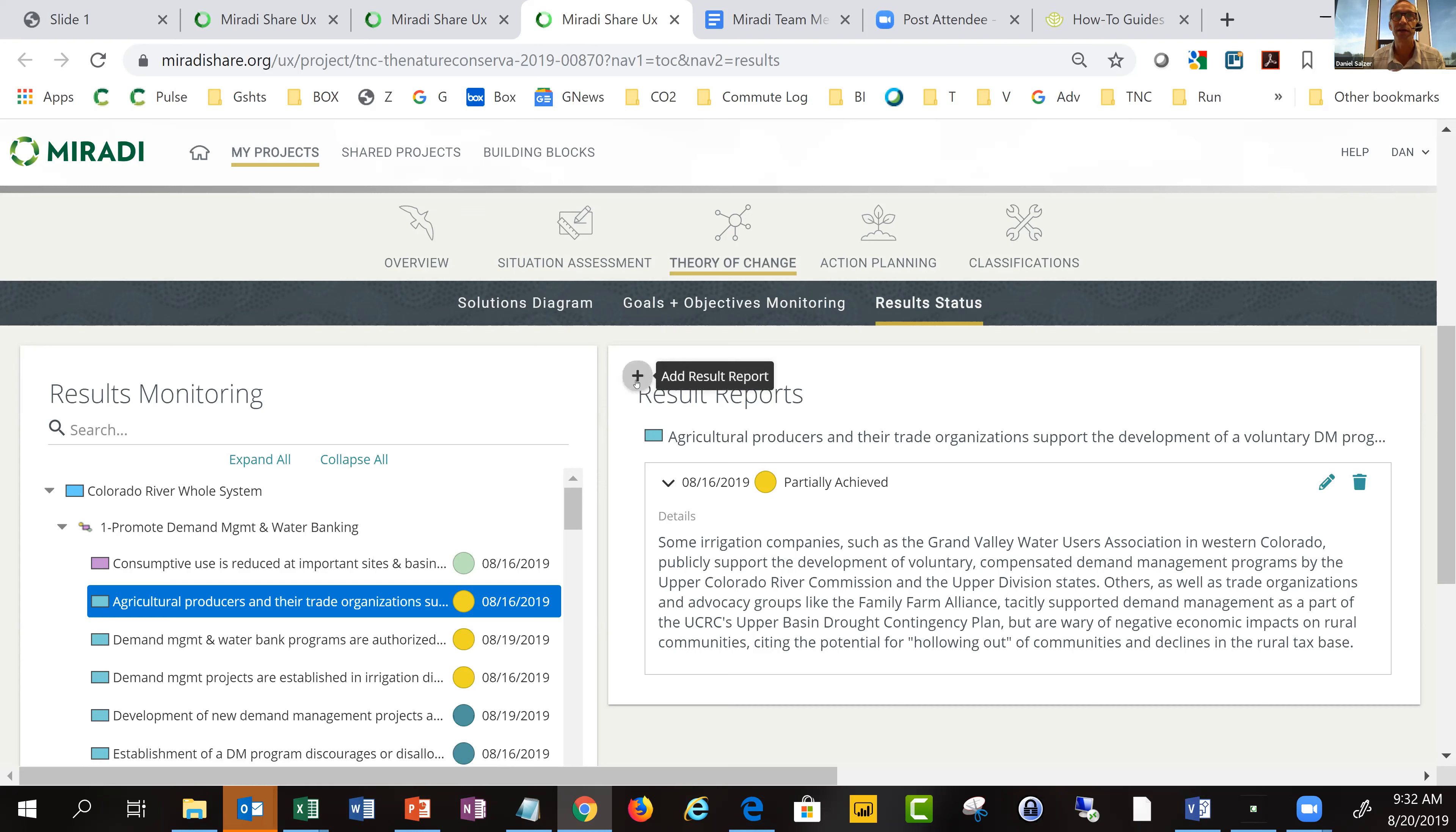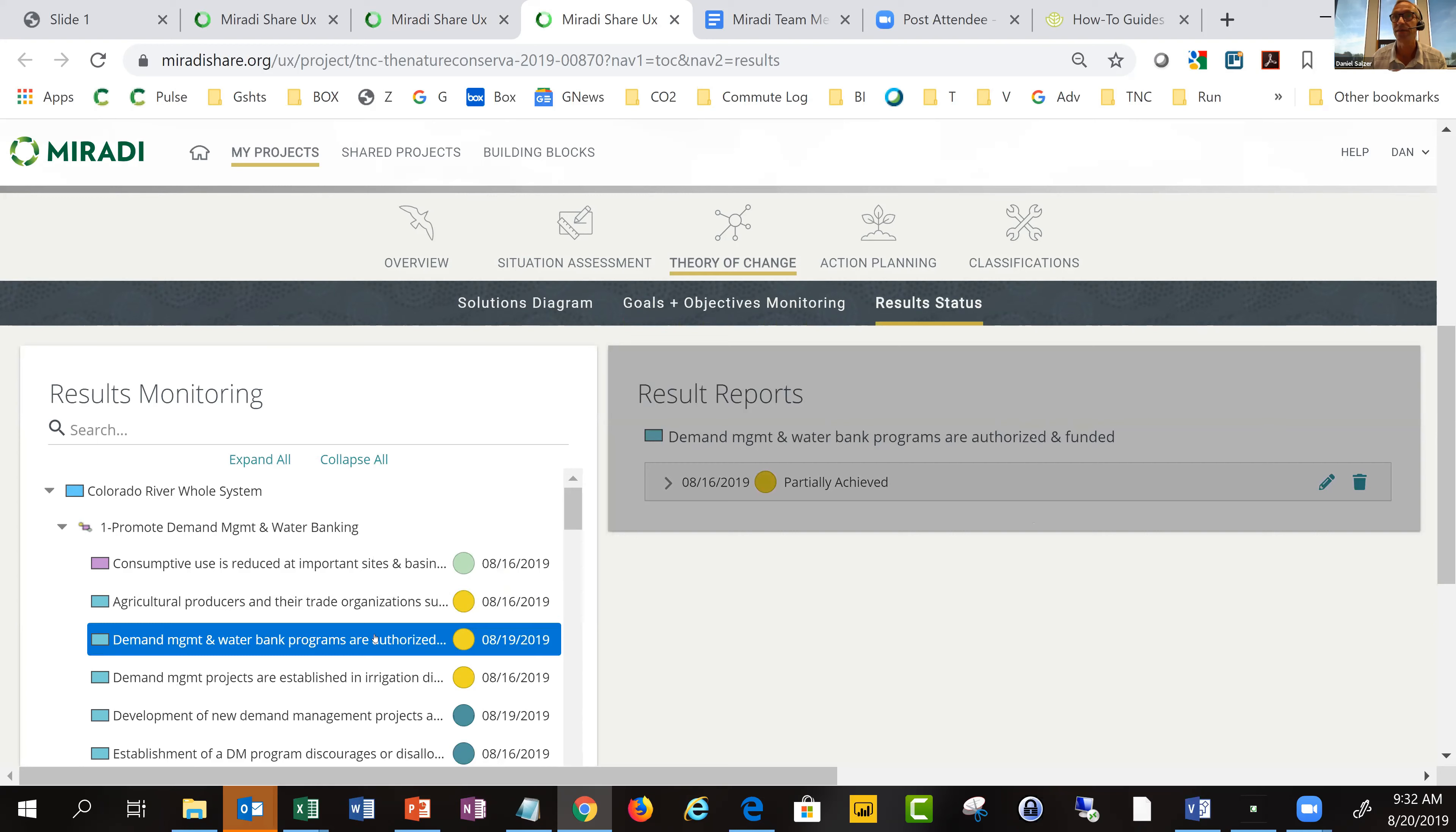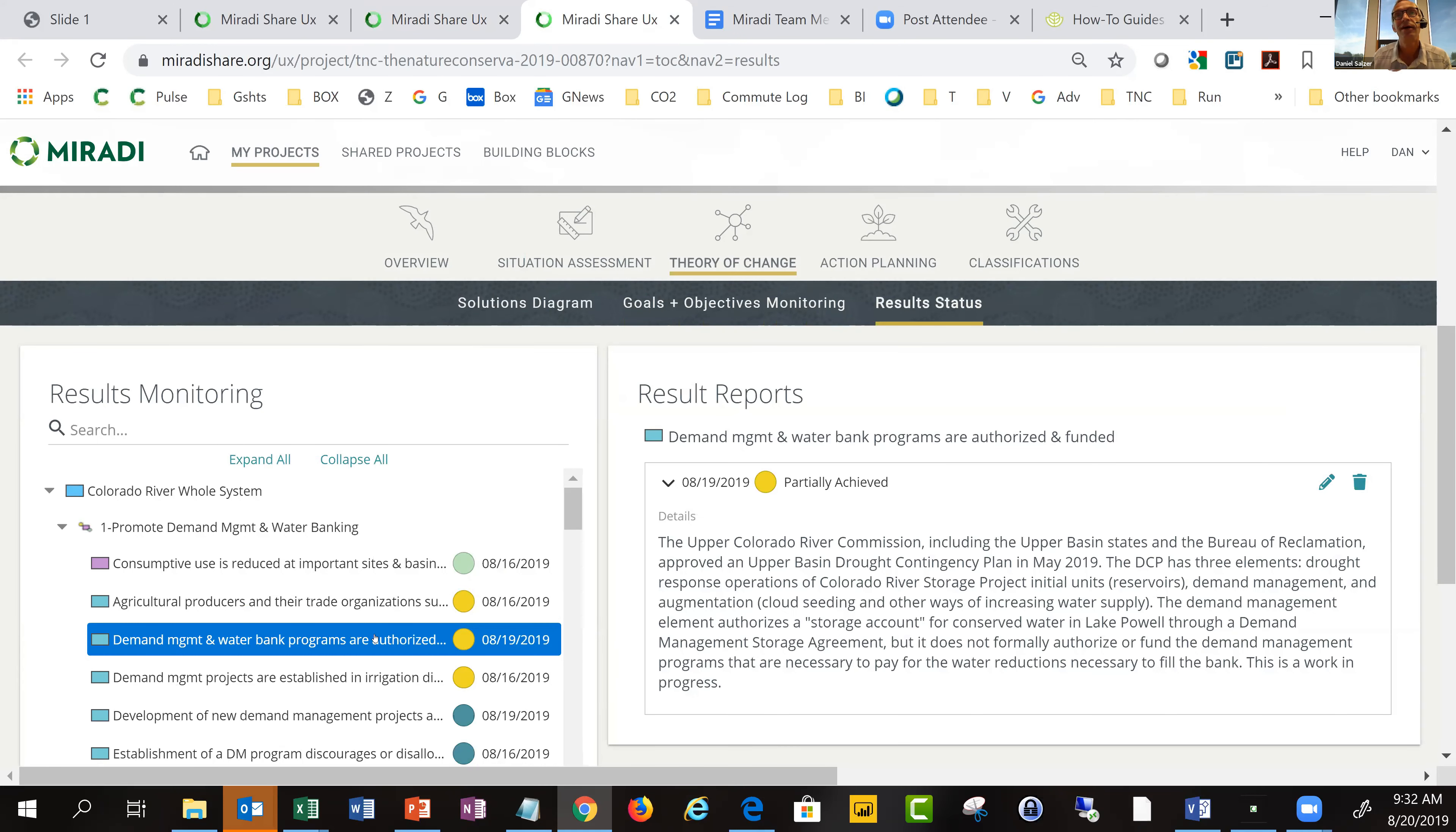This is the indicator measurement. If we go to the qualitative results status, you can see a color coded listing of all the intermediate results that were on that results chain. It's really easy when Patrick and their team have a new update—they can come in here and add a new result statement.